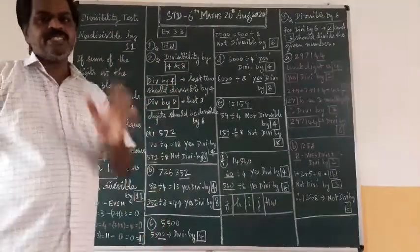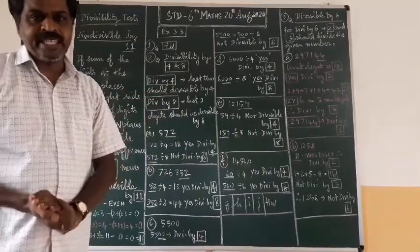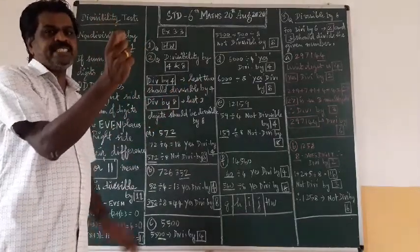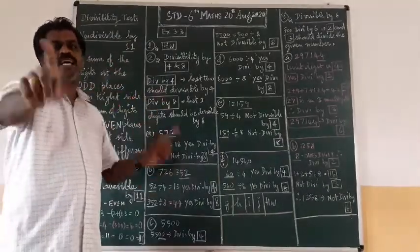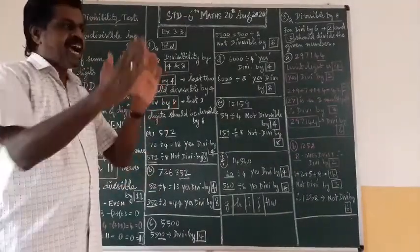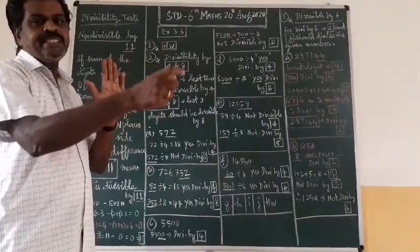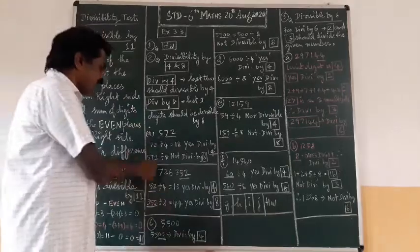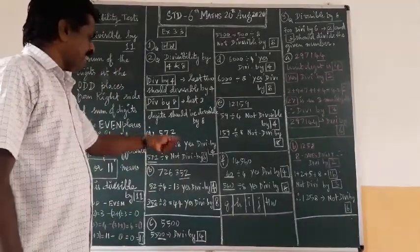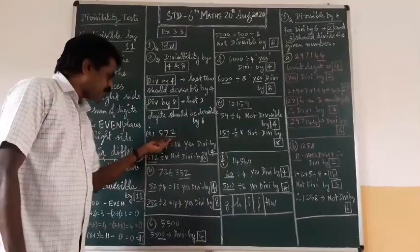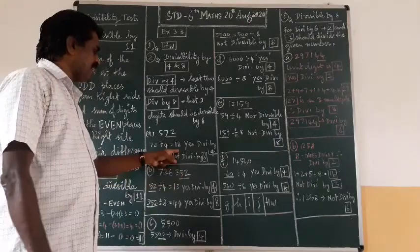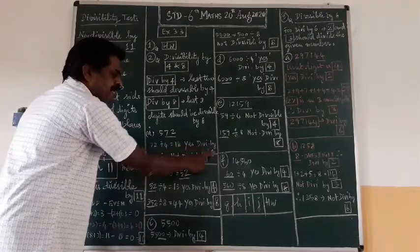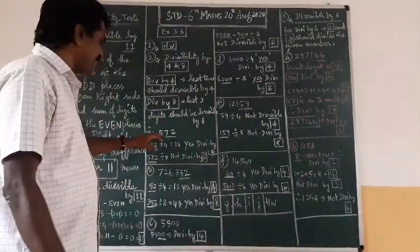The condition for divisibility by four: take the last two digits — the ones and tens place combined. If those two digits are divisible by four, the whole number is divisible by four. For eight, take the last three digits — ones, tens, and hundreds. If those three digits are divisible by eight, the whole number is divisible by eight. Let's apply this: 572. For four, take the last two digits: 72. Is 72 divisible by four? Yes, exactly. So 572 is divisible by four.